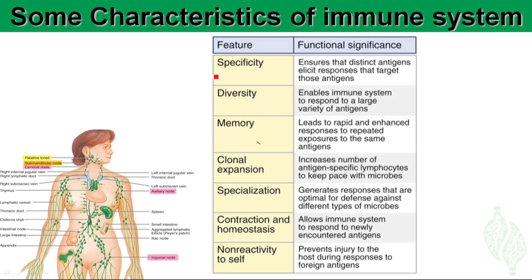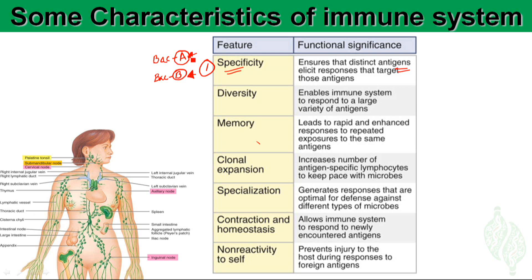Some basic characteristics of the immune system that we should know: first is specificity. Specificity means that when bacteria A invades our body, the immune system mounts an immune response to that specific bacterium. If bacteria B then enters the body, the immune cells that recognized bacteria A cannot recognize bacteria B — they can only recognize bacteria A. In this way the immune system is very specific to a particular bacterium or antigen.